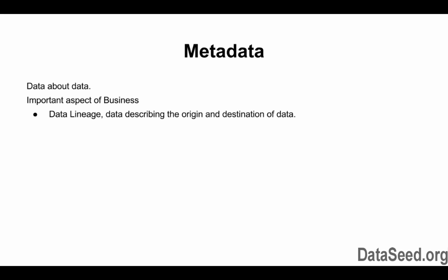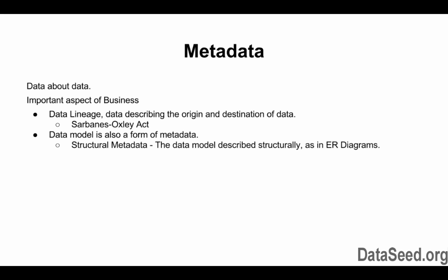Data lineage is a type of metadata that describes where all the data came from. In order to comply with the Sarbanes-Oxley Act, you must keep record of the data's origin, so data lineage is very important. The data model is also another form of metadata. Entity relationship diagrams are used to describe metadata structurally, called structural metadata.